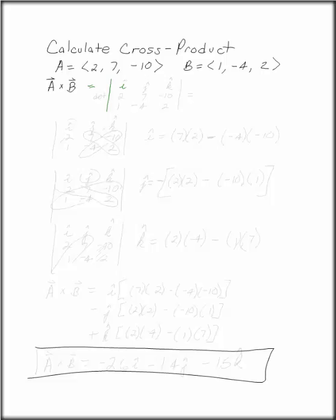So start with I, J, and K in the top row. Vector A is in the second row: 2, 7, negative 10, and vector B is in the third row: 1, negative 4, 2. We want to find this determinant.